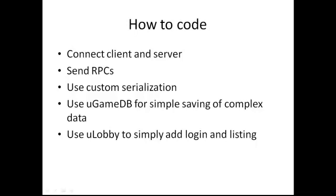So how to code it? We will first connect the client to the server and then send RPCs back and forth. We can use custom serialization to tell uLink how to serialize a custom class — what properties should be serialized and the logic — in a simple function. We have uGameDB to simply store game data on the server in a key-value pair structure, and we can use uLobby for simple login and server listing.